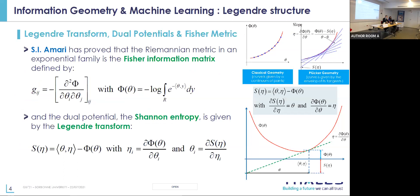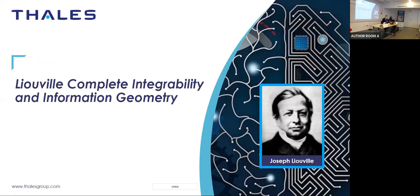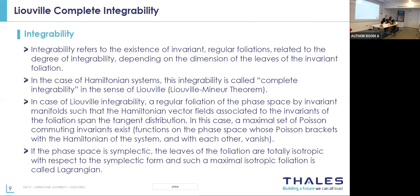About complete integrability on information geometry: integrability refers to the extent of invariant regular foliation, related to the degree of integrability depending on the dimension of the leaves of the invariant foliation. In the case of Hamiltonian systems, this integrability is called complete integrability — in the sense of Liouville — with a regular foliation of the phase space by invariant manifolds such that the Hamiltonian vector field associated to the invariants of the foliation spans the tangent distribution. In this case, the maximal set of Poisson commuting invariants exists.